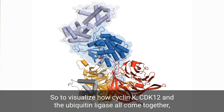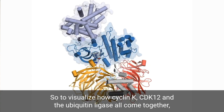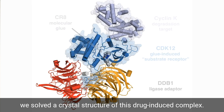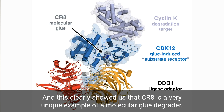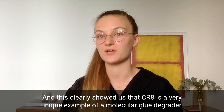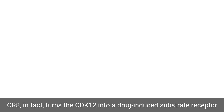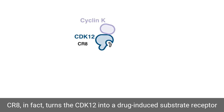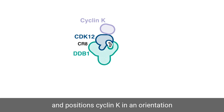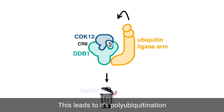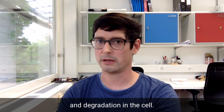To visualize how cyclin K, CDK12, and the ubiquitin ligase all come together, we solved a crystal structure of this drug-induced complex. This clearly showed us that CR8 is a very unique example of a molecular glue degrader. CR8, in fact, turns CDK12 into a drug-induced substrate receptor and positions cyclin K in an orientation that would usually be assumed by the target protein on the ubiquitin ligase. This leads to its polyubiquitination and degradation in the cell.